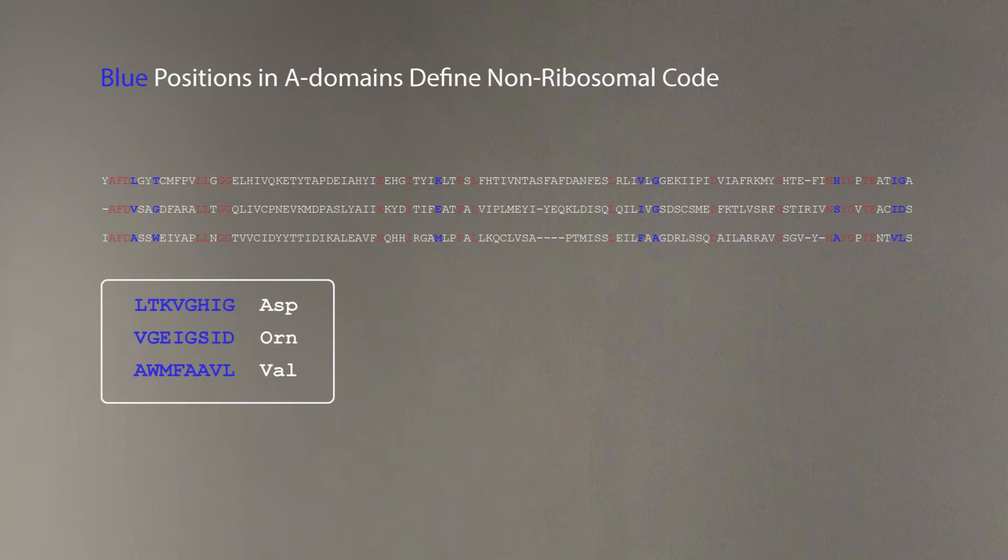As a result, Marahel was able to crack the non-ribosomal code, and it turned out to be extremely complex. Eight amino acids, located in different parts of adenylation domain, code for a single amino acid, as shown on this slide.